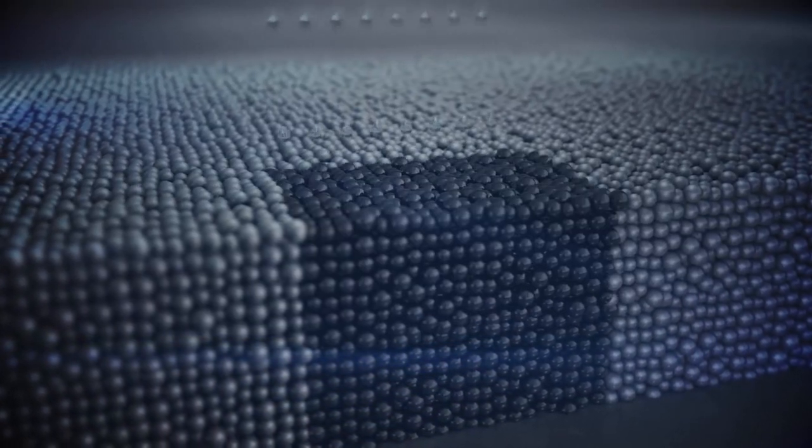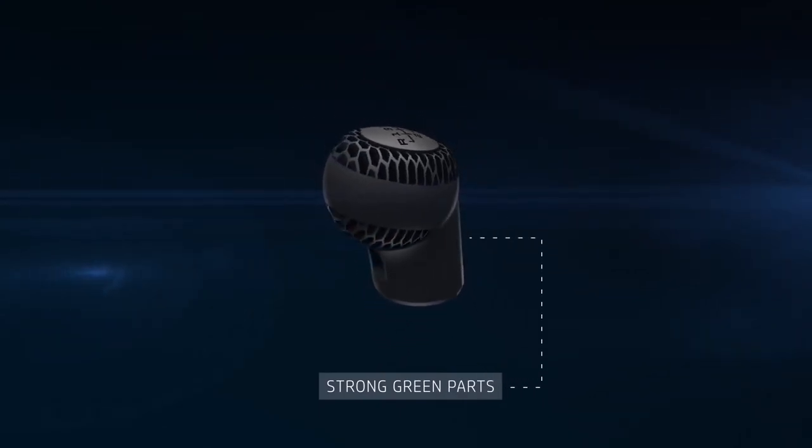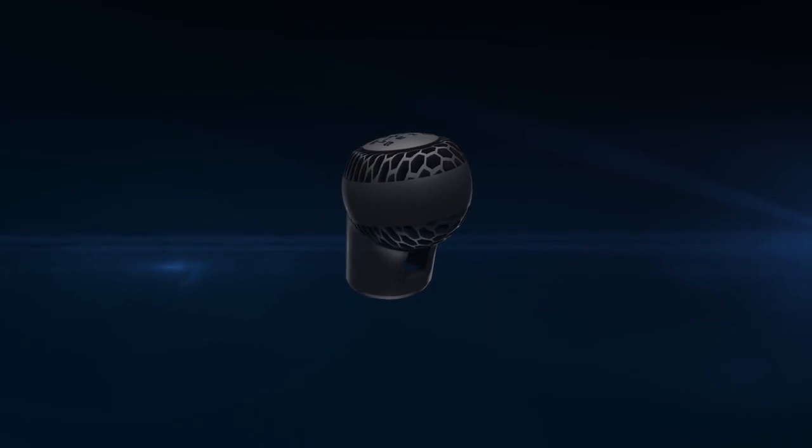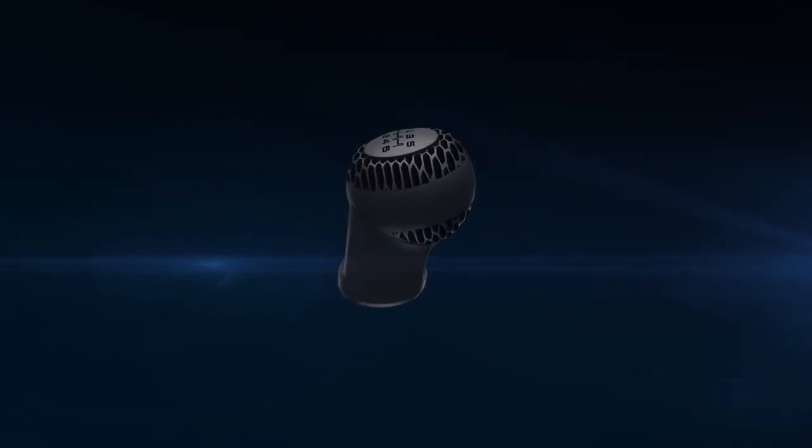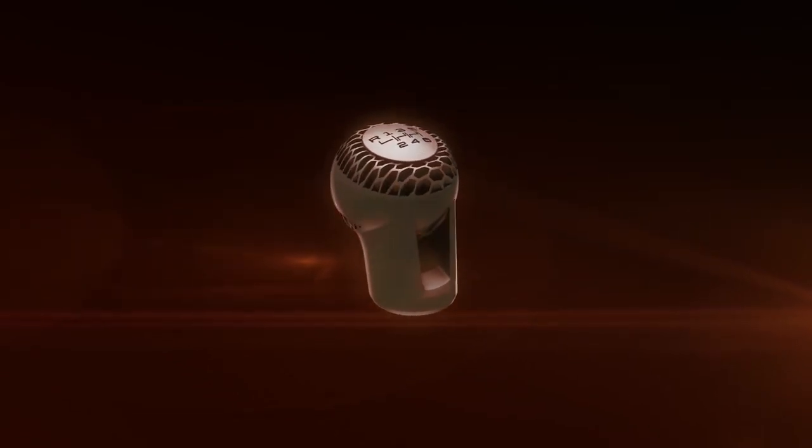At the end of the process, a high-strength green part can be removed from the powder bed, and the remaining powder can be processed and reused. Out of the printer and after decaying, the part is sintered using an industry standard sintering solution.